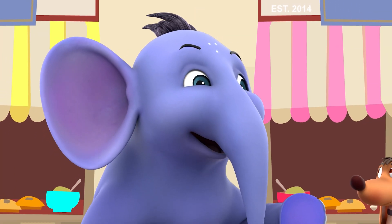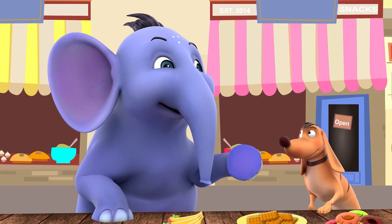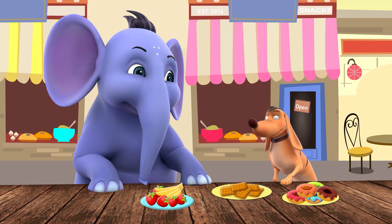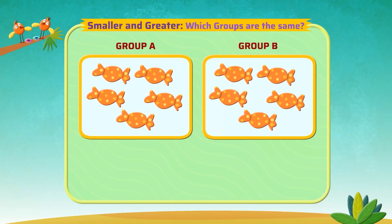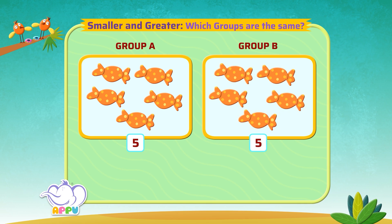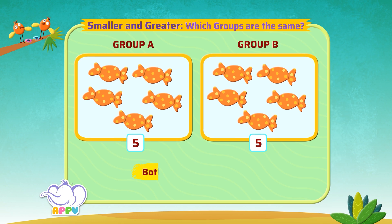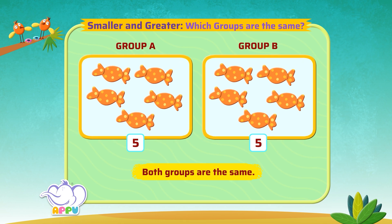There will be times when both the groups will have the same number of items. Let's look at group A — it has five candies, and group B also has five candies. Both the groups have the same number of candies, so the groups are the same.